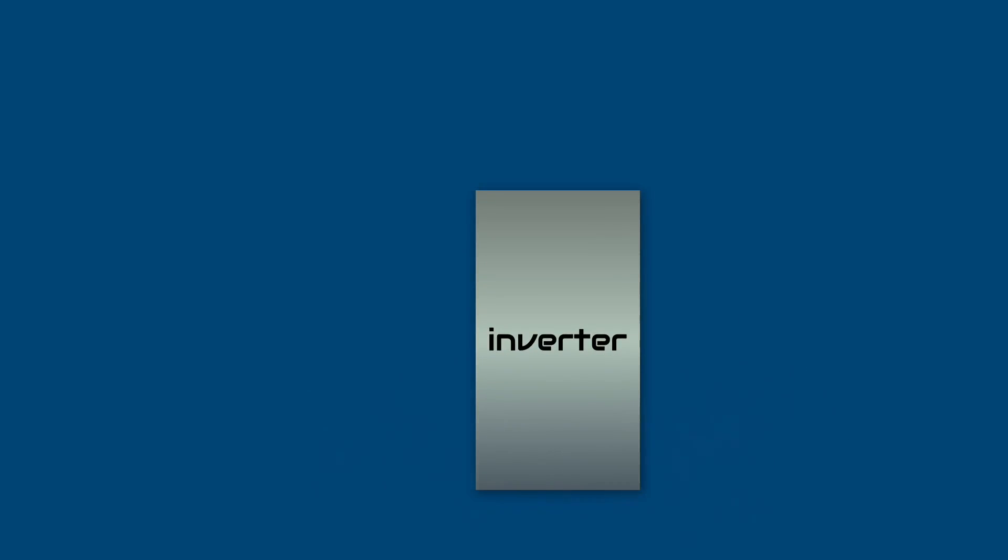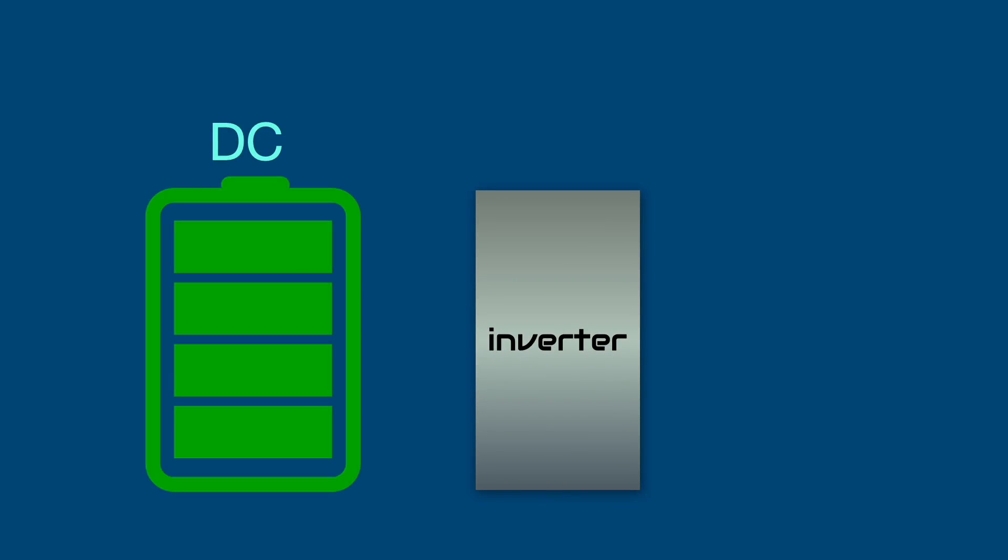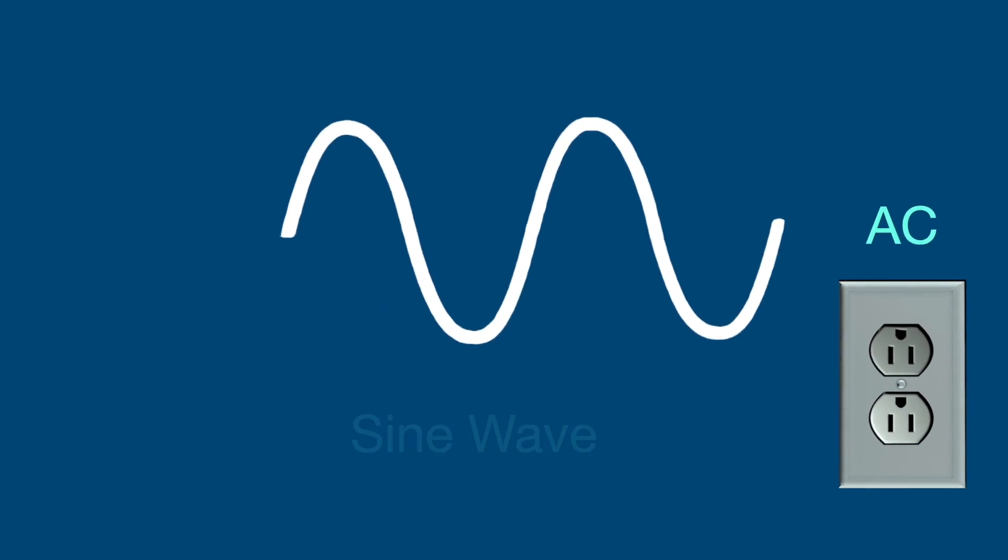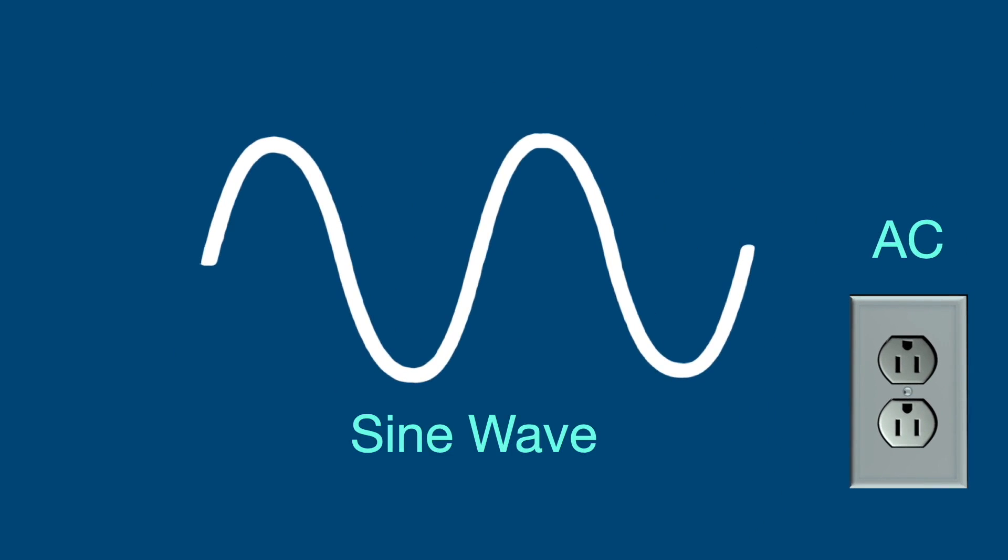How does an inverter work anyway? It takes DC or direct current, the type of electricity found in solar panels or batteries. The current flows in one direction only in DC. So we send it through the inverter where it turns it into alternating current or AC. That's the type of electricity used by the appliances in your house. The current changes directions or alternates 60 times a second in North America, 50 times a second in most of the rest of the world.